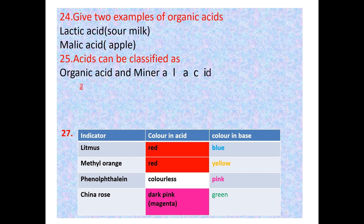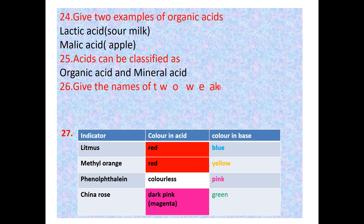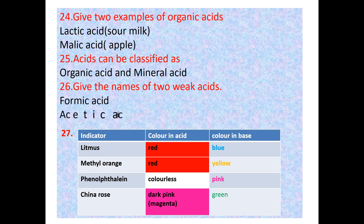Question 25: Acids can be classified as organic acid as well as mineral acid. Question 26: Give the names of two weak acids — formic acid and acetic acid. Strong acids include hydrochloric acid, sulfuric acid, etc. Formic acid and acetic acid are the weak acids.